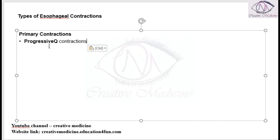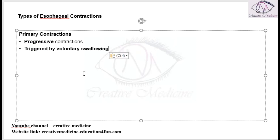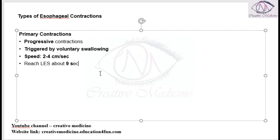Primary contractions are actually progressive contractions, and these occur following voluntary swallowing. Once the patient swallows, the primary contractions will start. These primary contractions travel at a speed of around 2-4 cm per second and reach the lower esophageal sphincter by around 9 seconds.